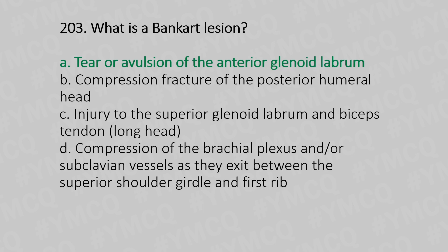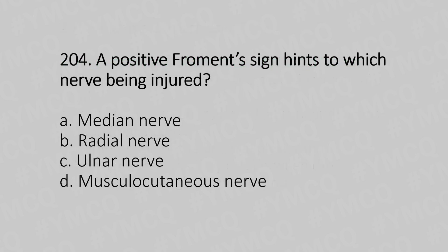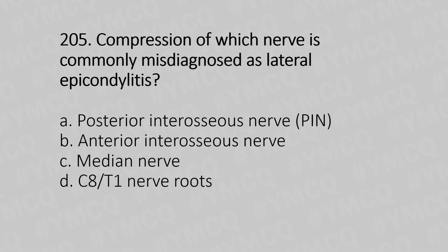Question 204: A positive Froment's sign hints to which nerve being injured? Option A: Median nerve. Option B: Radial nerve. Option C: Ulnar nerve. Option D: Musculocutaneous nerve. The answer is Option C: Ulnar nerve.